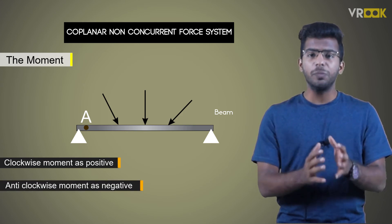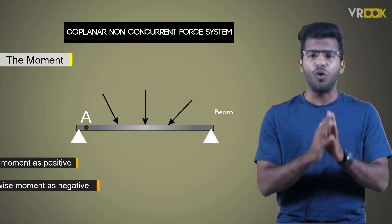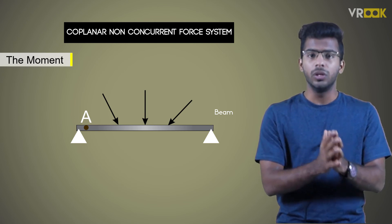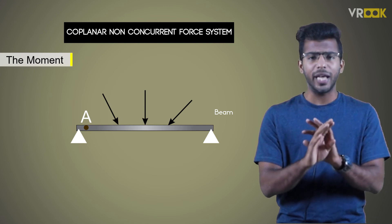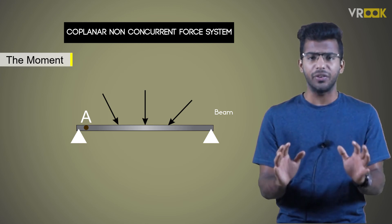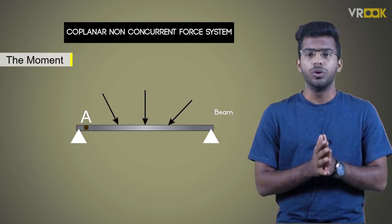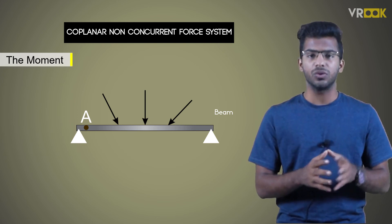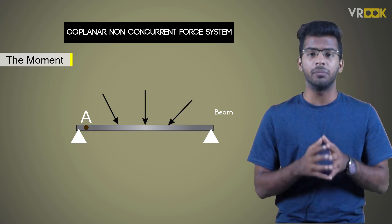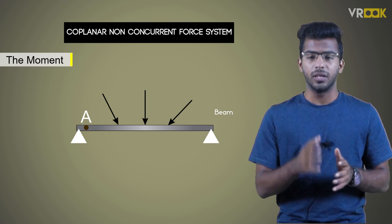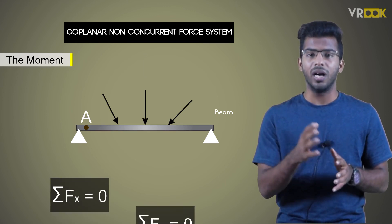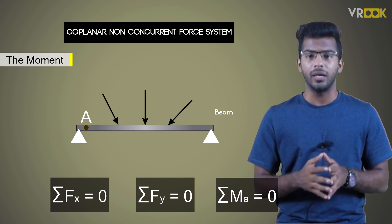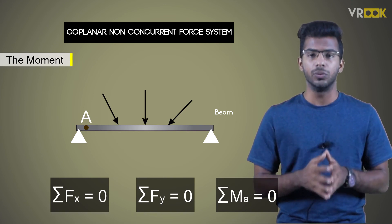Now, if the algebraic sum of all the moments about a particular point is zero, then the body won't have any rotatory motion. So for a coplanar non-concurrent force system, the equations of equilibrium are sigma Fx = 0, sigma Fy = 0, and sigma Ma = 0.